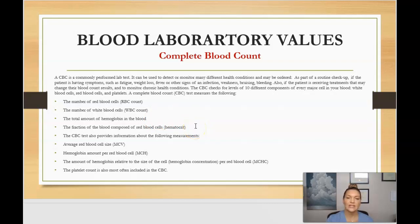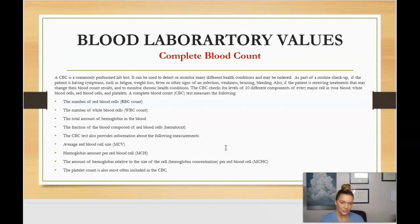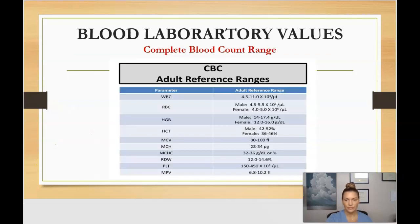The CBC also shows the fraction of the blood composed of red blood cells, otherwise known as hematocrit. The test also provides information about the average red blood cell size, or MCV; the hemoglobin amount per red blood cell, or MCH; and the amount of hemoglobin relative to the size of the cell, as well as the platelet count.